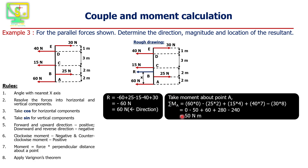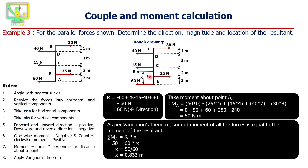Now when we apply Varignon's theorem — which states that the algebraic sum of all moments is equal to the moment of the resultant of the system — we calculate the moment of the resultant: R into x about point A equals sigma MA. So sigma MA equals R into x. Sigma MA is 50 and the resultant is 60, so from this we can calculate the value of x, which is 0.833 meters.